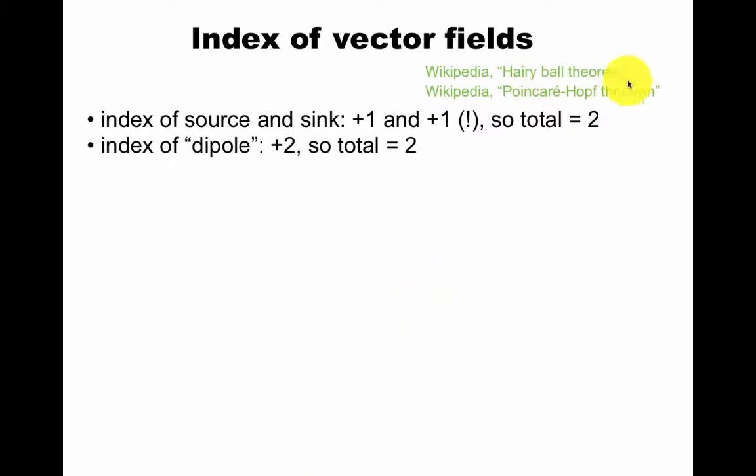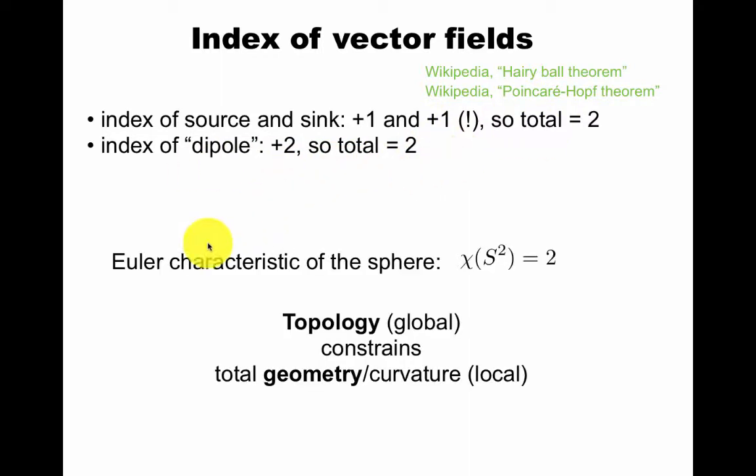Here's another way to think about this. The hairy ball theorem: on this page they define an index which is how often a vector rotates if you go around a closed curve. The index of a source and a sink is plus one and plus one, so the total is two. The index of a dipole is plus two, so the total is two. And this had to be so. Topology constrains the total geometry. If you're not familiar with this, it would be useful maybe to understand some topology to constrain what's going on here.